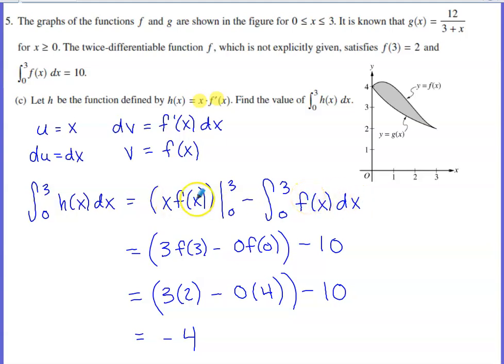When I evaluate at 3, I get 3 f of 3. When I evaluate at 0, I get 0 f of 0. Zero times 0 causes this piece to turn into 0. This line would receive full credit. The scoring guidelines show negative 4 as the answer. You get negative 4 by recognizing that f of 3 equals 2, which they give us in the problem statement. Your final answer should be negative 4. Have a great day. Thank you.